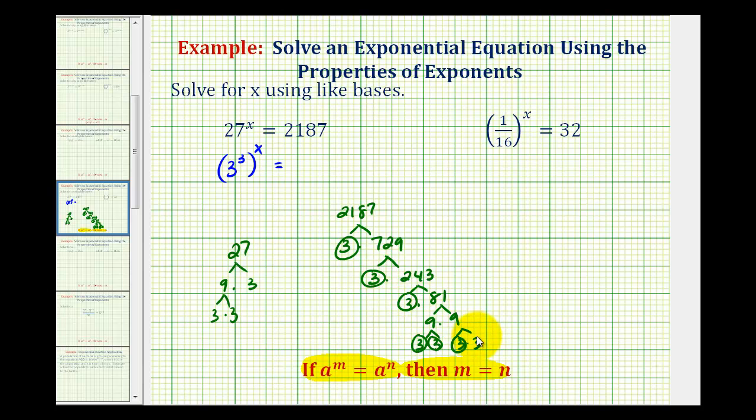5, 6, 7 factors of 3, so we can write the right side as 3 raised to the power of 7.